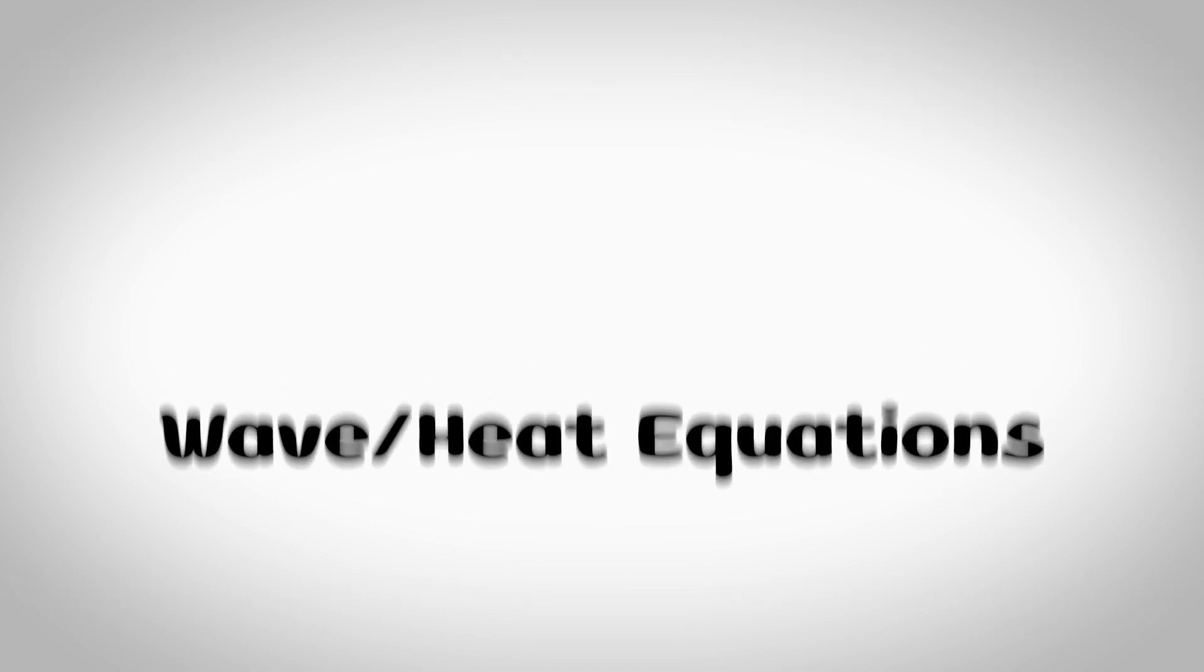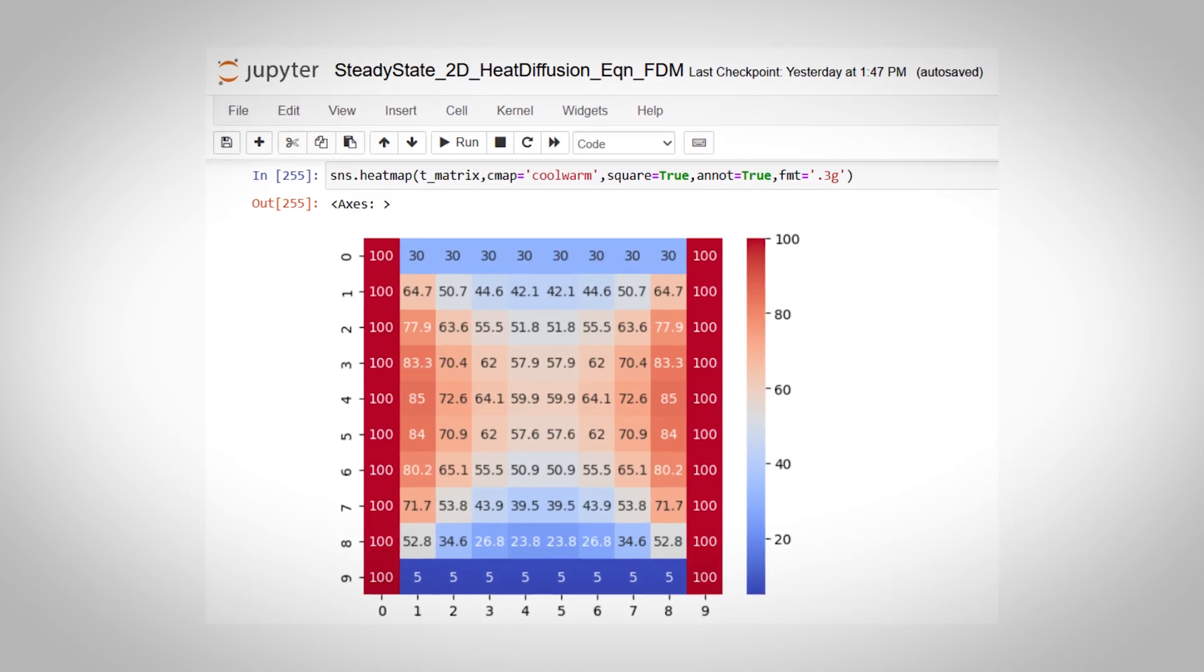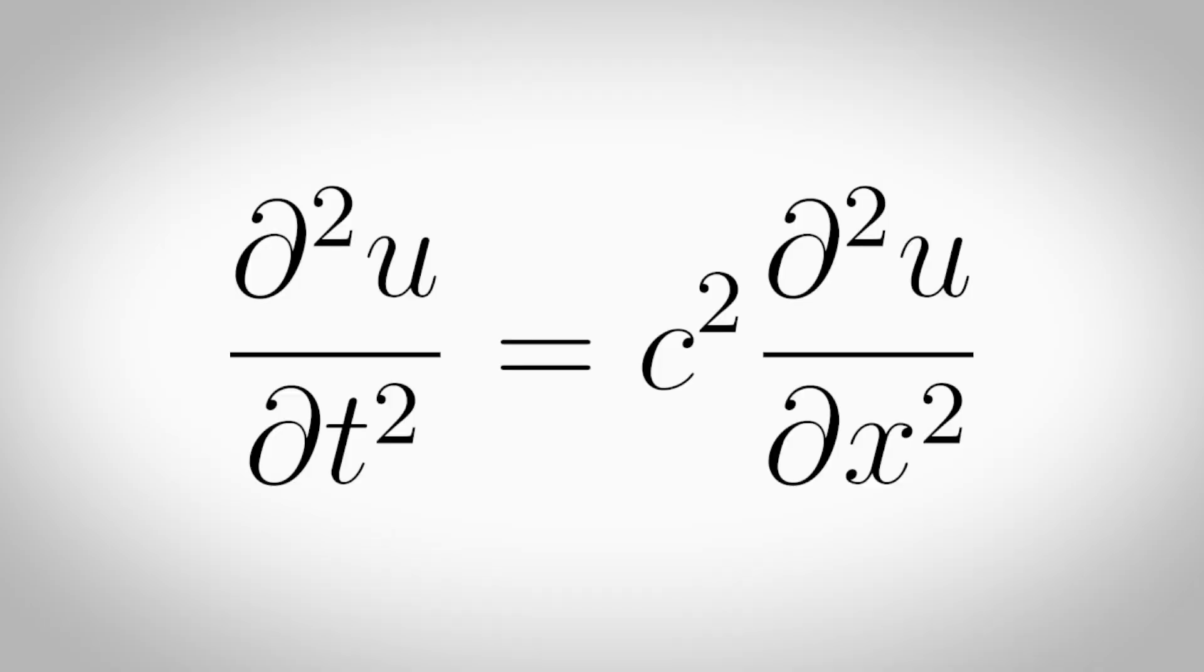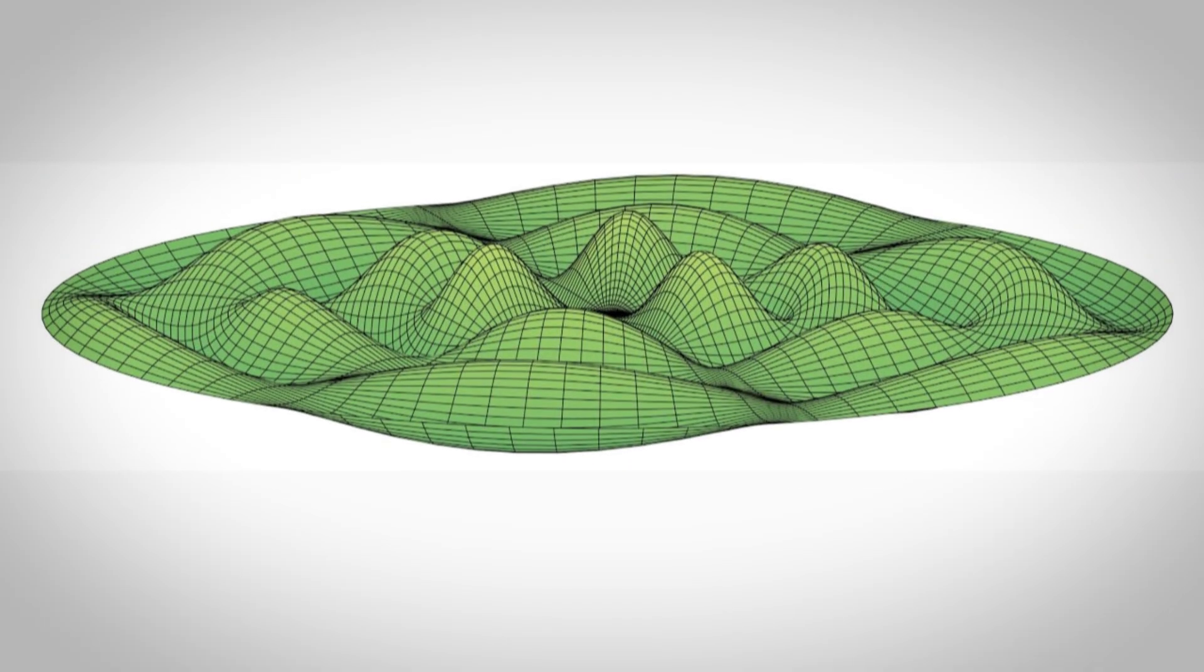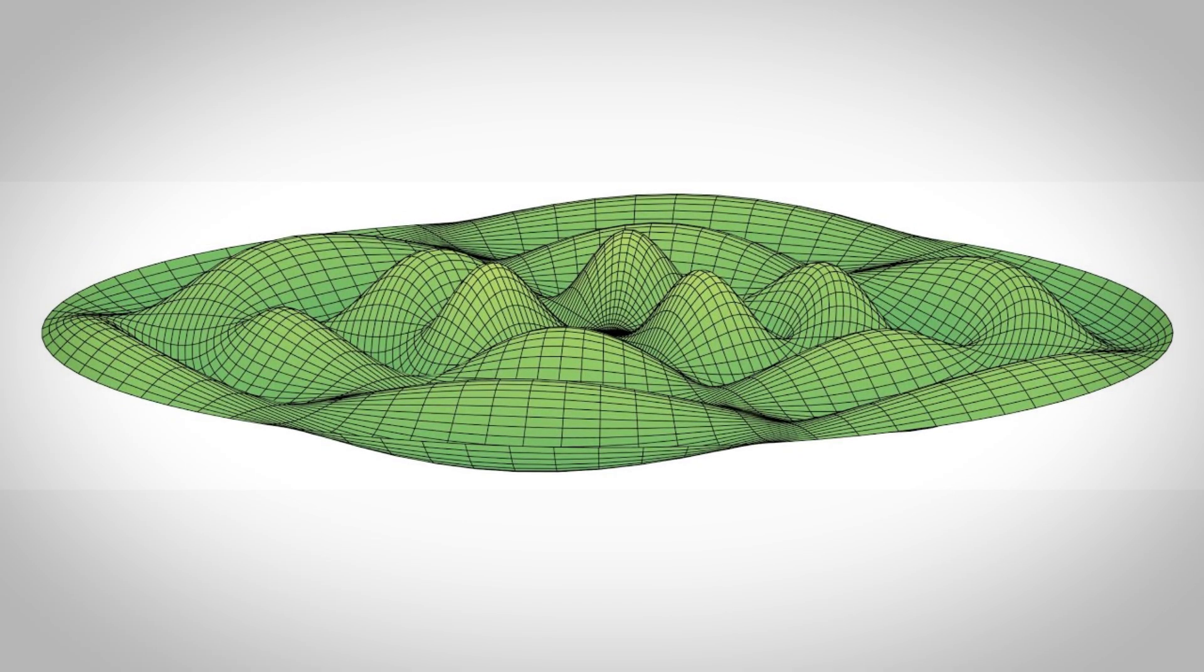Wave/heat equations. The heat equation models how heat diffuses through a medium over time and the wave equation models vibrations or waves like on a string, membrane or in air.